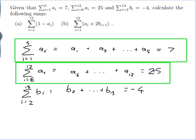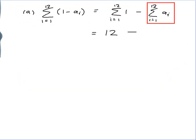So that does cover a1, a2, a3, a4, a5, a6, a7, a8, a9, a10, a11, a12. So that covers all the ones from 1 to 12. So to put them all together from 1 to 12 must be 7 plus 25. So this must be 7 plus 25. That would be 12 minus 32, which is negative 20. Well, that wasn't that bad.